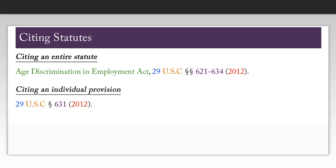Now that we've found all the elements we need, we can create our citation by plugging each of those elements into the format we laid out earlier. Note that the difference between citing an entire statute and citing an individual provision is that when you cite an individual provision, you do not include the official name of the act, and you only include the specific section you're citing rather than the span of sections.